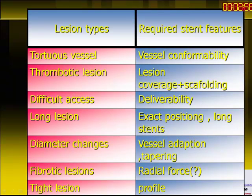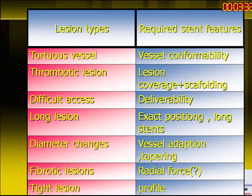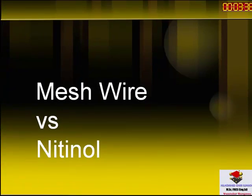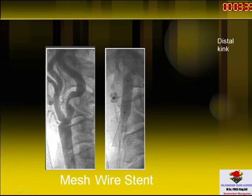Each lesion characteristic will demand that you select a type of stent that matches. For tortuous vessels, you need better vessel conformability. For thrombotic lesions, you need good lesion coverage by a covered stent. For difficult access, you need better deliverability. For long lesions, you need exact positioning like the Carotid Wallstent. For diameter changes, you need vessel adaptation like open cell nitinol stents. For fibrotic lesions, you need good radial force, and for tight lesions, you need a good crossing profile.